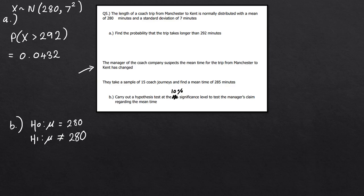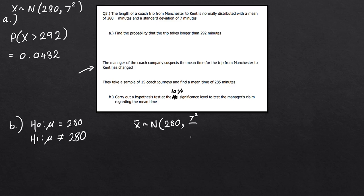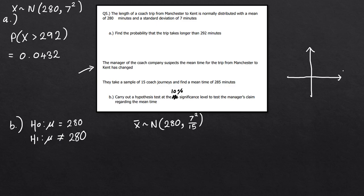Assuming H0 is true, X-bar is normally distributed with mean 280 and variance 7²/15 - remember to take the square root of that full expression when inputting the standard deviation into your calculator. For a two-tailed test I'd recommend drawing a sketch of the bell curve to see what the probability will look like.